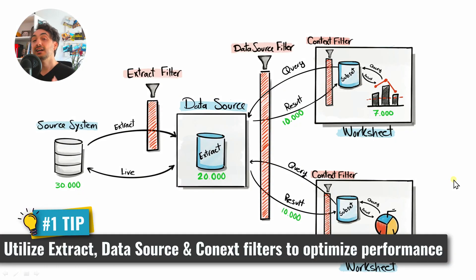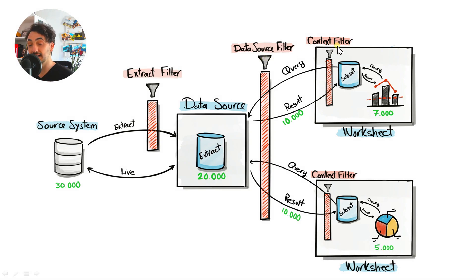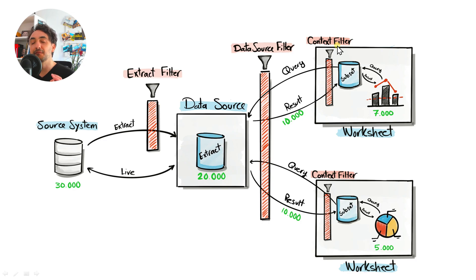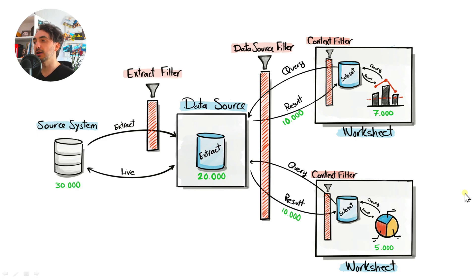The first tip is to utilize the extract filter, data source filter, and context filter. I've seen a lot of projects where developers forget about them or ignore them because they're not important in the visualizations, but they are very important for optimizing performance in Tableau. Always discuss with end users about promoting one of those filters — first an extract filter, if not then a data source filter, and lastly a context filter.